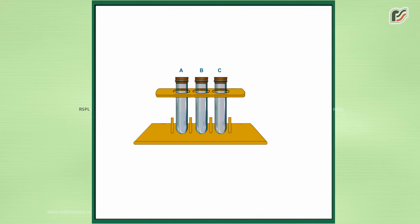Take three boiling tubes A, B, and C. Pour some water in test tube A and put iron nails in it.